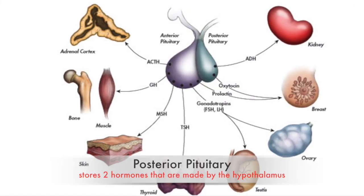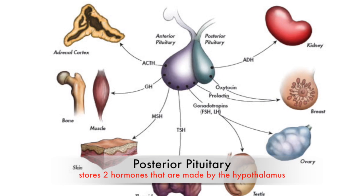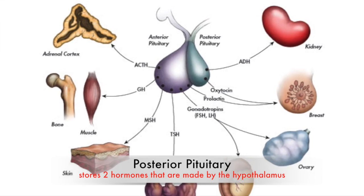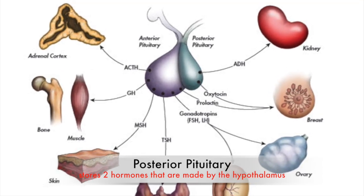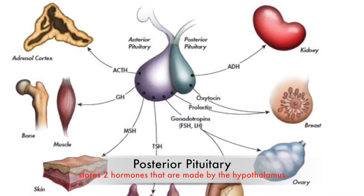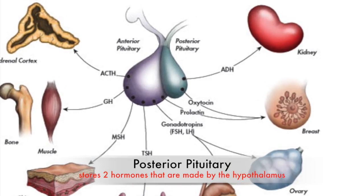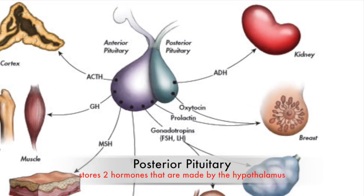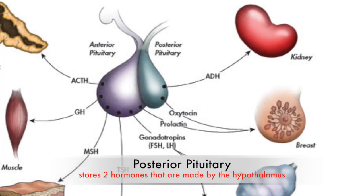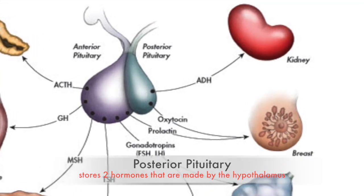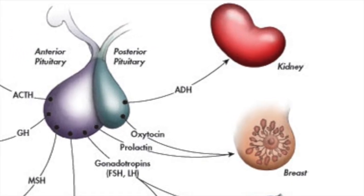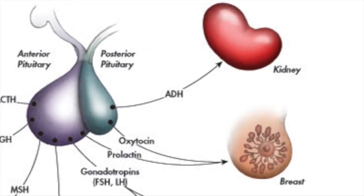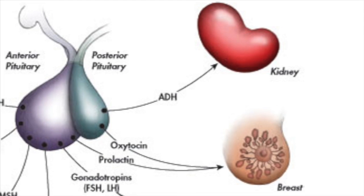The posterior pituitary gland stores two hormones that are actually synthesized in the hypothalamus. These are antidiuretic hormone and oxytocin.